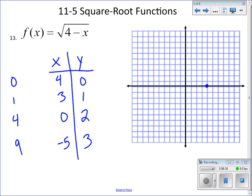Now we graph these: (4,0), (3,1), (0,2), and (negative 5,3). And you will see that this radical actually opens up to the left. The reason for that, that we're going to learn over time, is this negative right here. It kind of causes the radical to open up to the left.